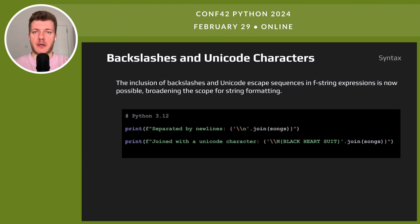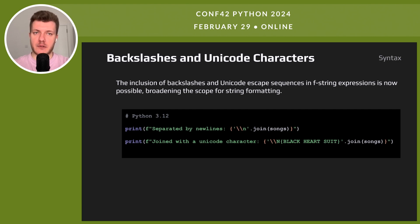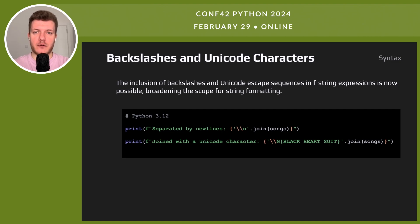The new update expands f-strings to include backslashes and unicode. Now special characters and unicode symbols fit right into f-strings. Here is how you can separate items with new lines in an f-string, or join them using a unicode character like a black heart.